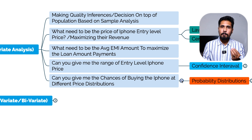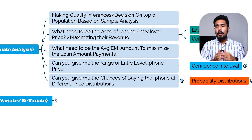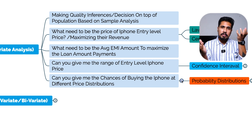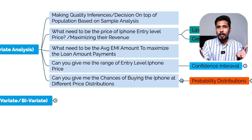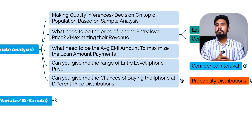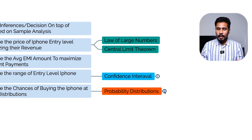To find the average price of an entry-level iPhone, I use the law of large numbers or central limit theorem. To explain the range — minimum and maximum entry-level price — I use confidence intervals. To give the probability distribution of each pricing, showing the chances of buying a phone at a particular price, I use probability distributions.